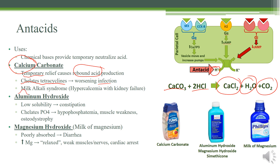Antacids can also cause milk alkali syndrome. To remember milk alkali syndrome, just remember hypercalcemia with kidney failure — if they have a high creatinine, they've got kidney failure. Hypercalcemia is remembered by bones, moans, groans, and psychiatric overtones: that means weaker bones, constipation for the moans, groans which is just pain, and psychiatric overtones — some sort of anxiety, depression, or maybe even delirium if they're old enough.